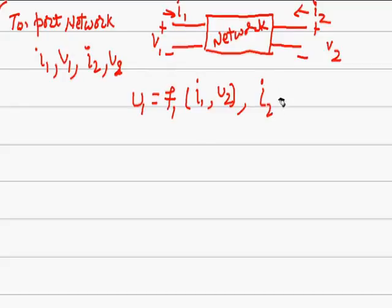Let us choose I1 and V2 as the independent variables, whereas V1 and I2 are the dependent. V1 depends upon I1 and V2. I2 depends upon I1 and V2. So V1 and I2 are the dependent.